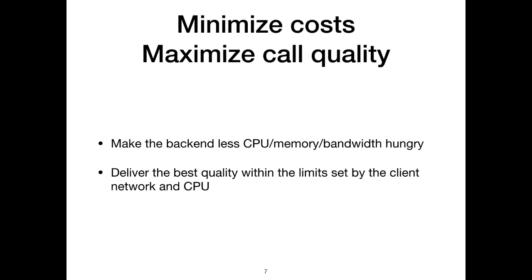Costs translate directly into infrastructure resource requirements. You pay for data transfer and virtual machine instance operational costs — so the more data you move and the more powerful instances you need, the heftier the bill. When we talk about optimizing infrastructure costs, we are really talking about minimizing data transfer and virtual machine operational costs.